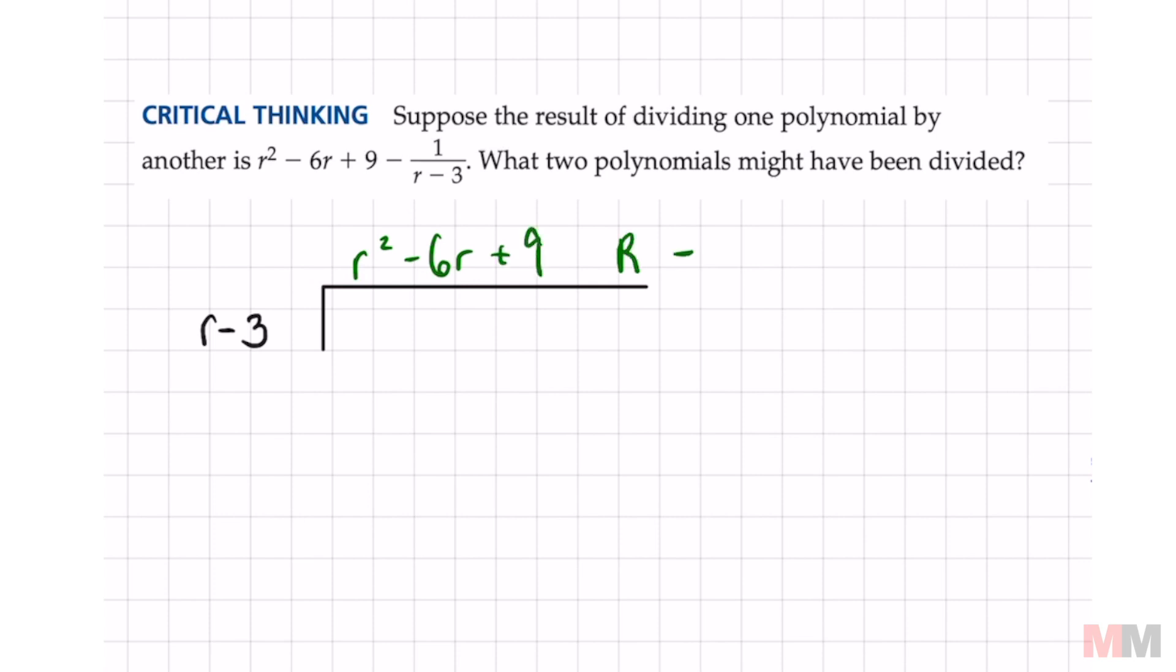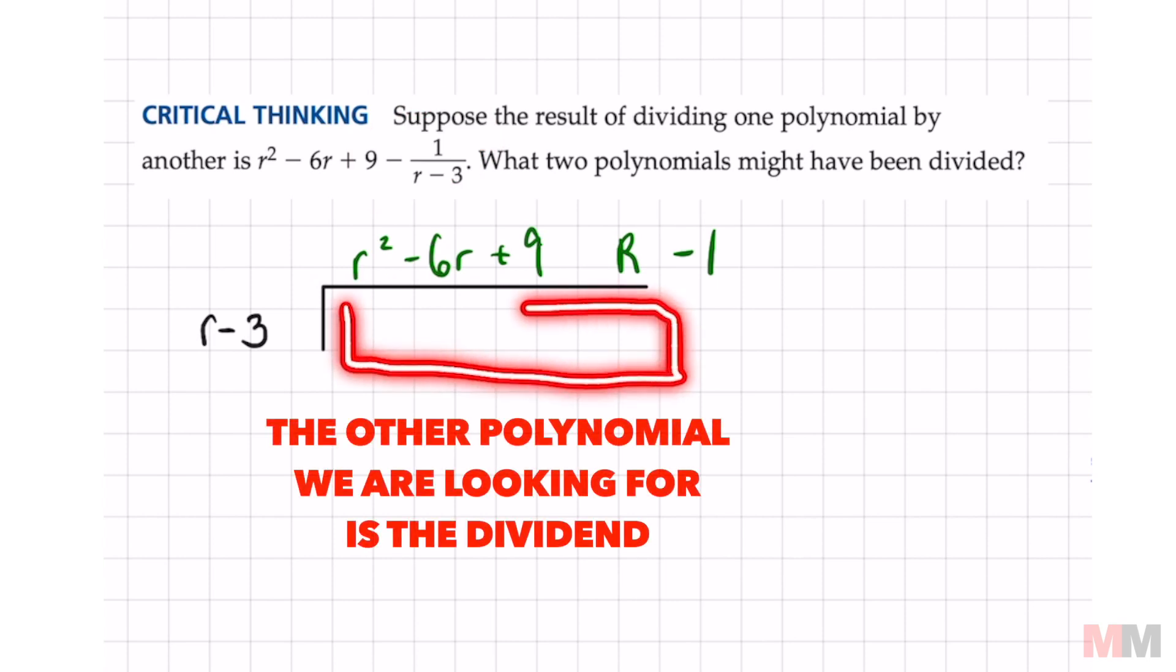and the remainder is negative 1. It's only this numerator part. Now our goal is to find this dividend right here.